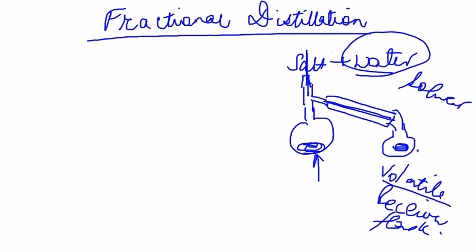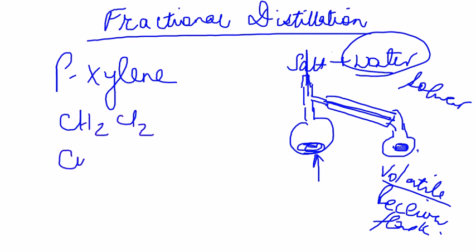But when do you use fractional distillation? Fractional distillation will be used or can be used when the boiling points are closer. For instance, in our case, what we would have is a mixture of paraxylene, and we are going to have methylene chloride, which is CH2Cl2, and we will have cyclohexane.